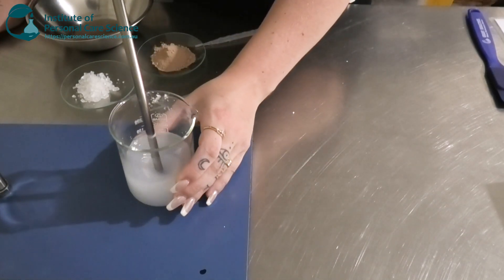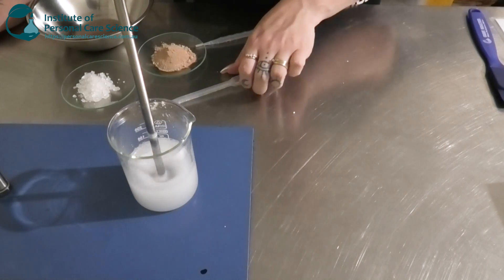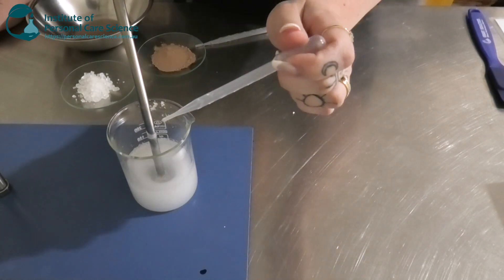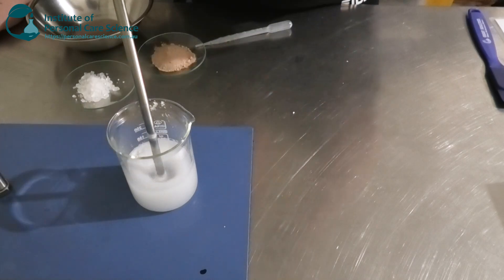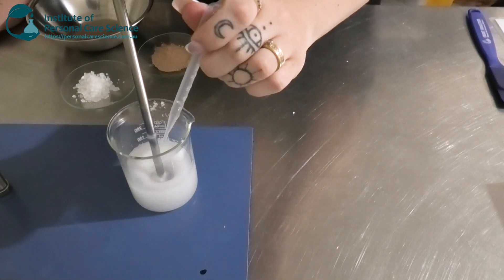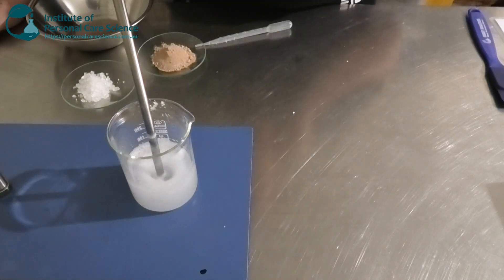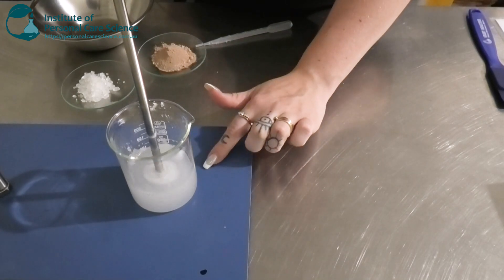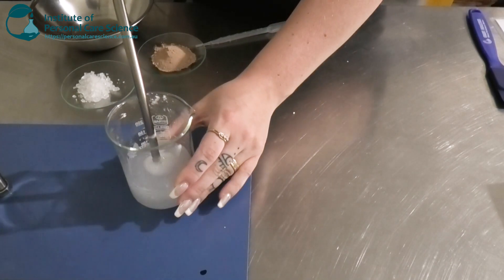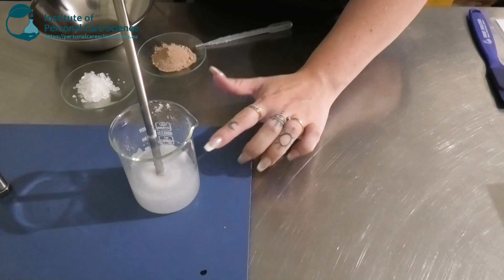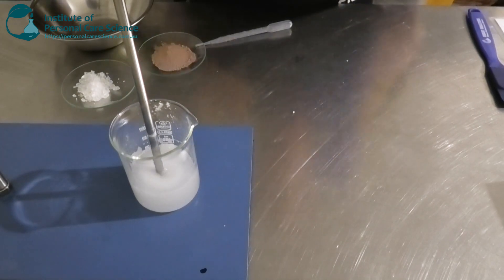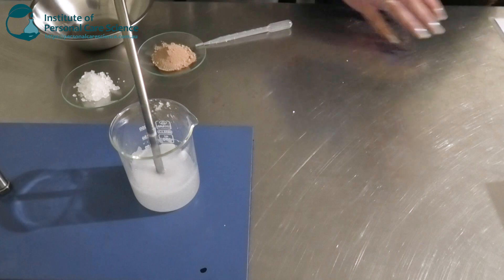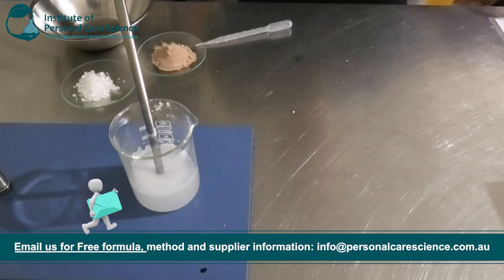Okay, so once that's all nice and homogeneous, we're now going to go ahead and partially neutralize our polymers here. Now, we only want to do this a little bit just for stability reasons. And you'll see now that's actually starting to thicken up as a nice gel. This isn't the full viscosity it will be just yet until we finish neutralizing it at the end. And we're just going to continue stirring that.